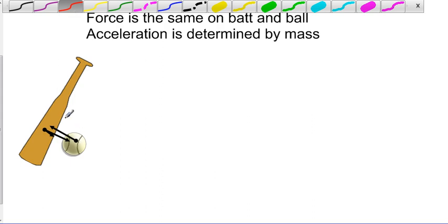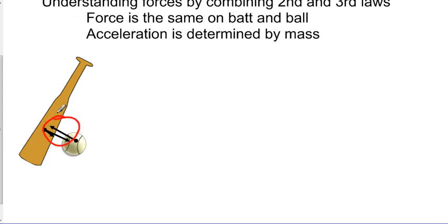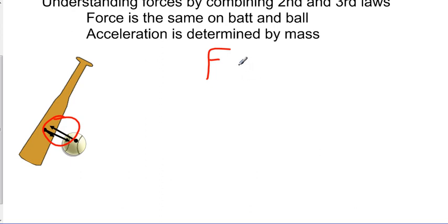In this particular case, it is impossible for the bat to apply more force to the ball, or alternately for the ball to apply more force to the bat, as long as neither deforms. So if the bat stays in one piece and the ball stays in one piece, we know that the force on both is going to be the same.